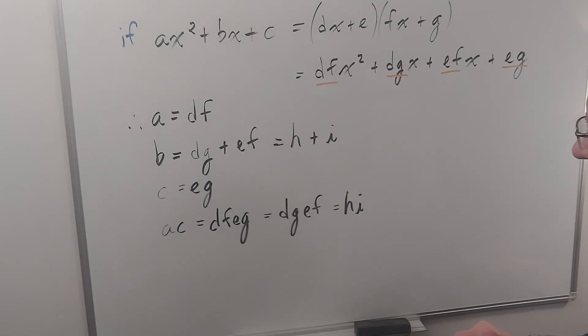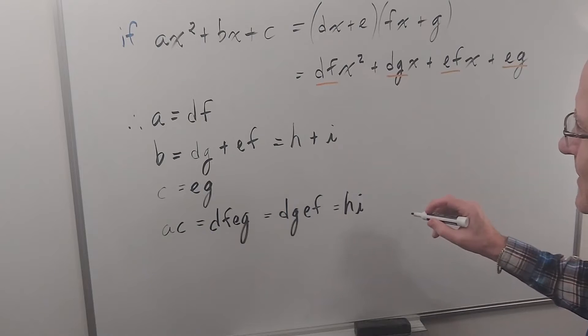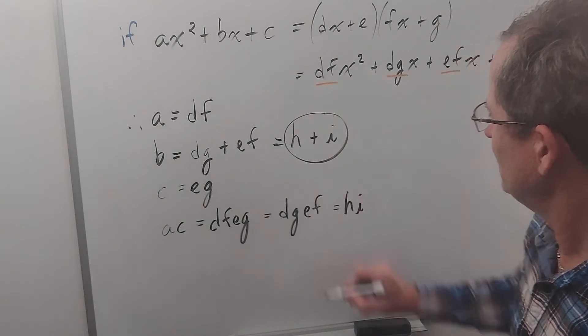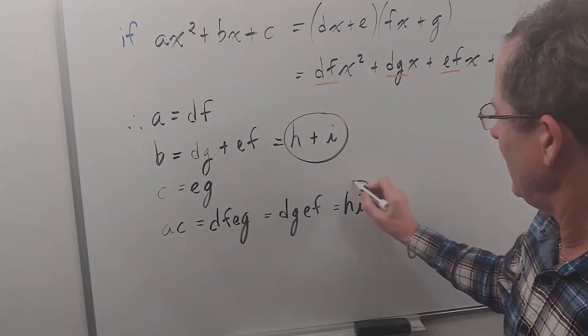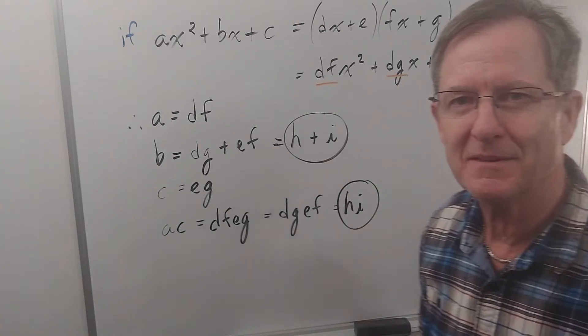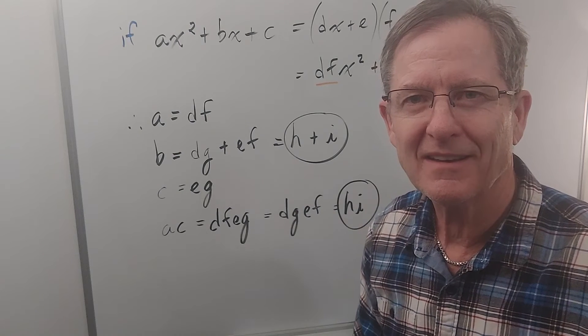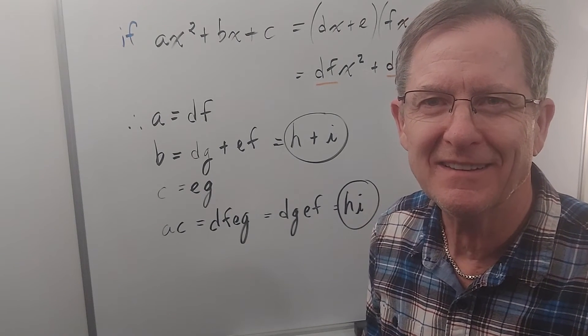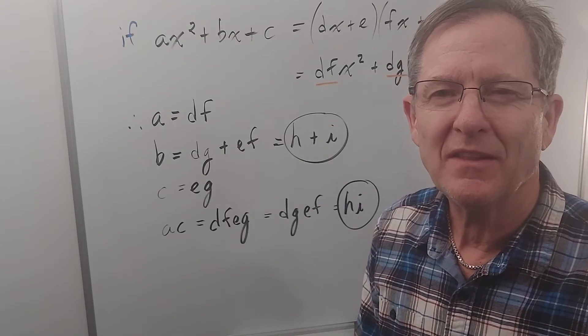So that proves it because b must be the sum of two numbers and ac must be the product of those two numbers. Who would have thunk? That's why we do it. They probably never told you why, they just did it. That's why.